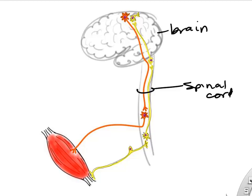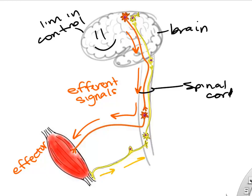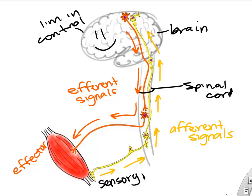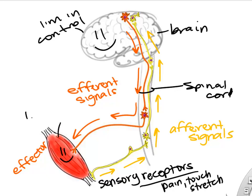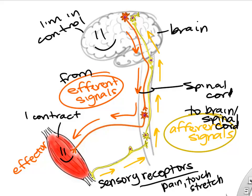The brain and spinal cord can send out efferent signals to effectors like skeletal muscle, and also receive information from the body. We call those afferent signals. Afferent signals come from sensory receptors regarding things like blood pressure, temperature, touch, or the position of your muscles. So we get efferent and afferent signals going either from our brain out to our body or back to our brain and spinal cord.